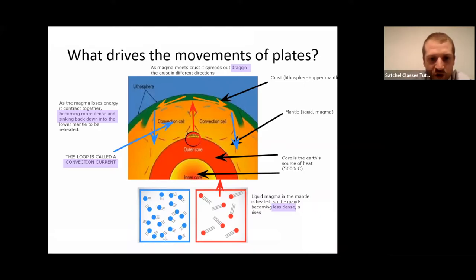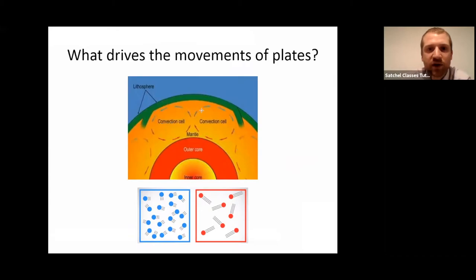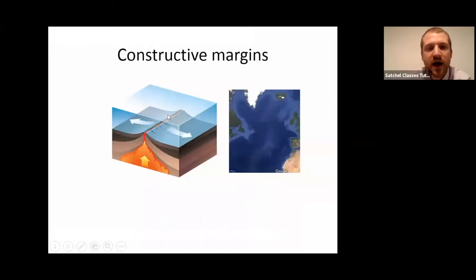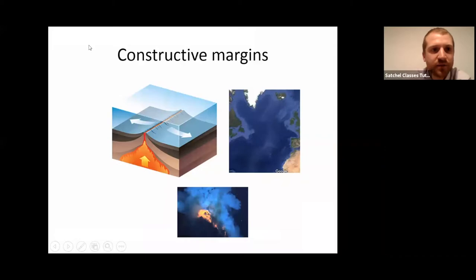Anything more dense — heavier, more magma particles that have contracted together — will be heavier and will sink down. So let's look at what boundaries we expect to find. First of all we are looking at constructive margins. Here we can see that the plates are being pulled in opposite directions — they're pulled away from each other. What this will lead to is magma having a gap to rise through.